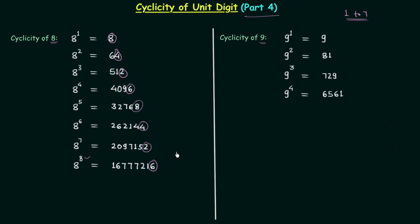So after every 4 intervals, 8, 4, 2 and 6 are repeated. Therefore the cycle of 8 has 4 digits: 8, 4, 2 and 6. I will write this down — cycle of 8 is having 4 digits and they are 8, 4, 2 and 6. You have to remember this.